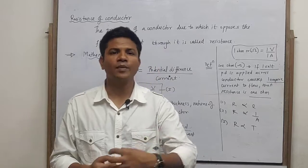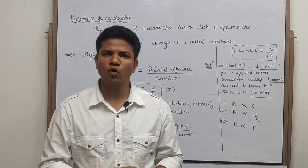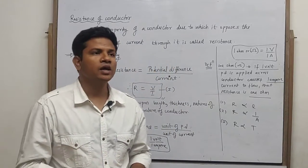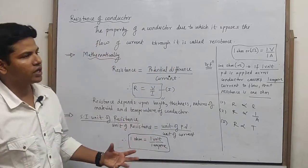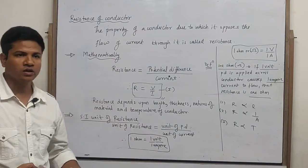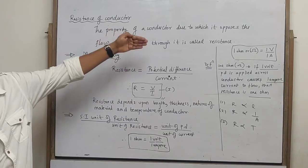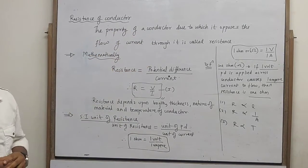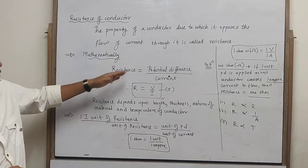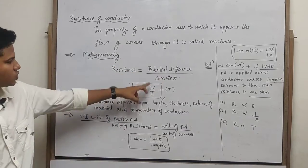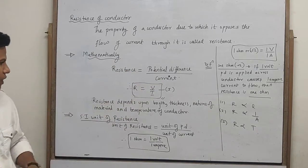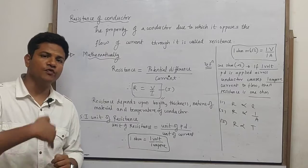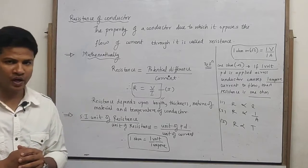Now let's talk about the mathematical formula. We can say that resistance of the conductor is nothing but resistance equals potential difference upon current. That is, R equals V upon I.